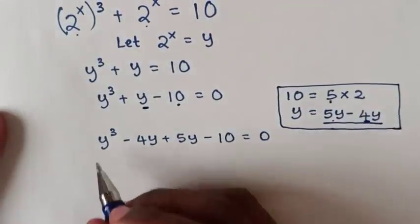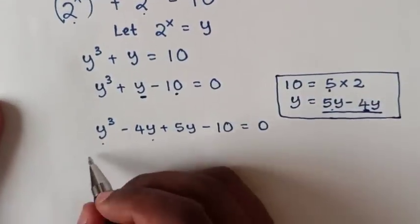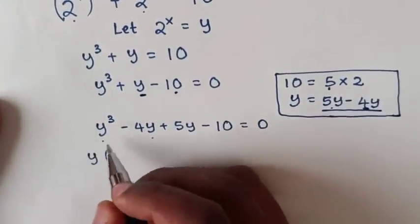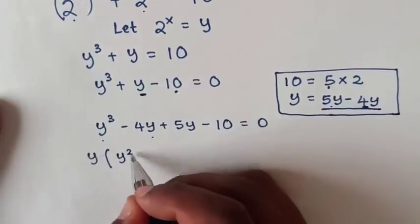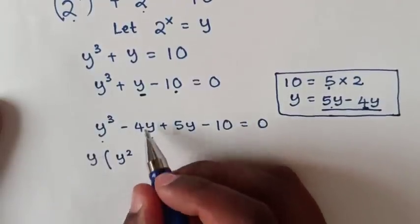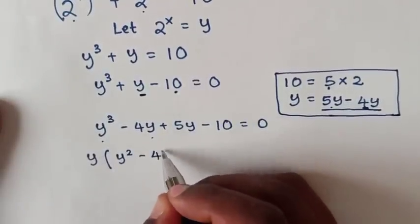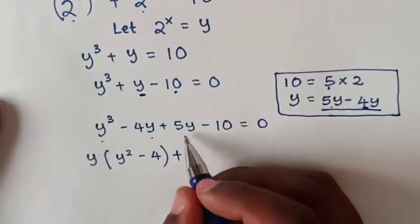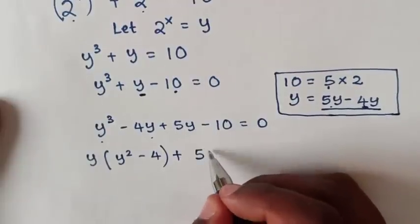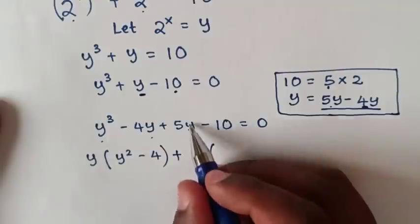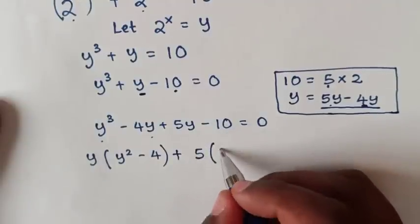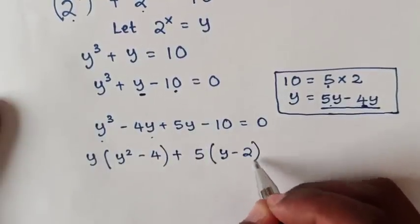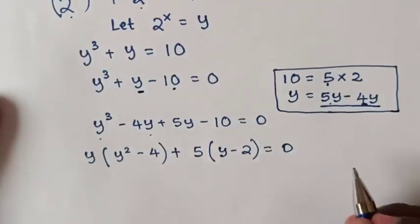In our equation, y is common in the first two terms, so we take y out of bracket: y bracket y squared minus 4. Then 5 is common in the last two terms: plus 5 bracket y minus 2, equal to 0.